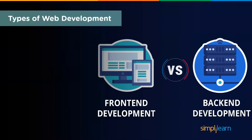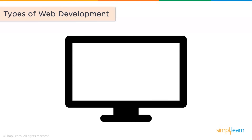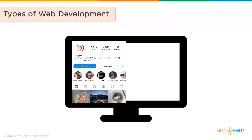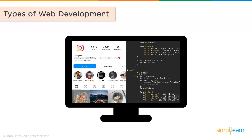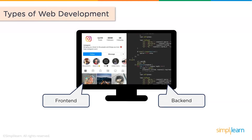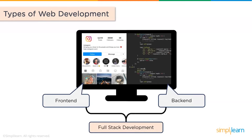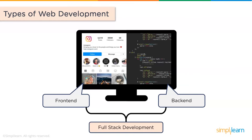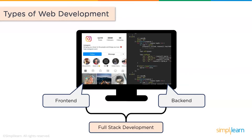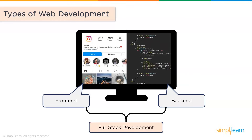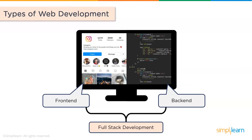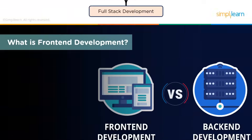Now let's look at the different types of web development. Web development could include the front end and the back end, and together they form something called full stack development. I'm sure you're wondering what they actually mean, so let's go ahead and understand them.